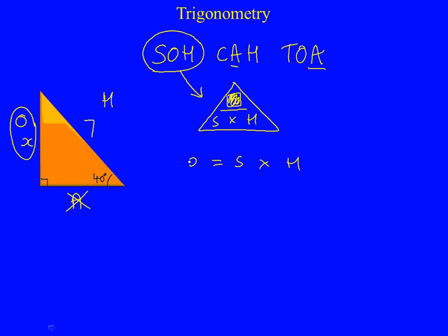And now we're going to substitute in the letters. So O is x, so x equals... S stands for sin on a calculator, and the angle, which is 40, remembering to put the 40 in brackets, times H, and it says here H is 7. So times 7.